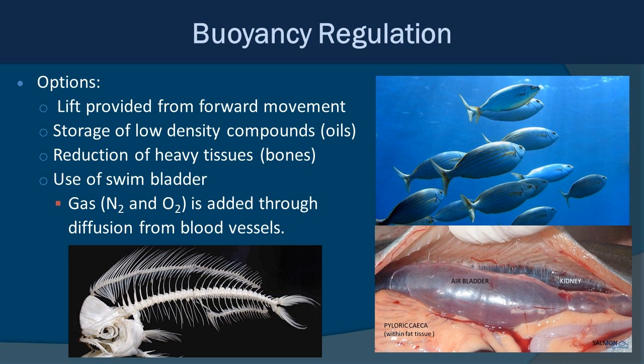Most fish with no other adaptation would literally just sink to the bottom, so they need methods to maintain buoyancy at various levels within the ocean. Some options are relatively simple, like swimming forward — the momentum gives them some lift. Other options include storing low-density compounds like oils, which are less dense than surrounding water — sharks actually do this. There's also the reduction of heavy tissues or bones: if you've seen fish skeletons, you'll notice their bones are very thin, which reduces density and weight to help keep them in the water.